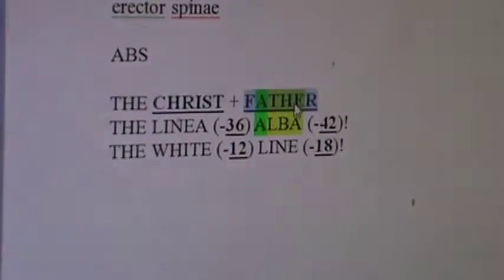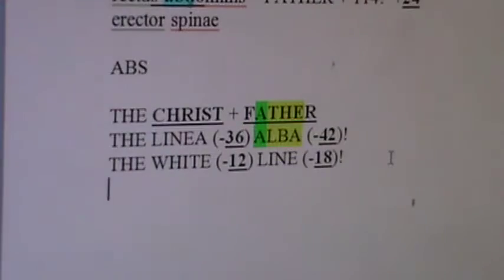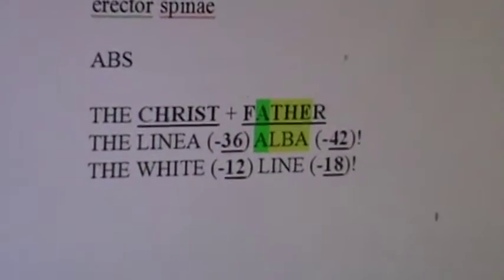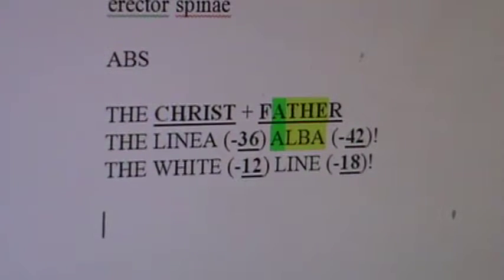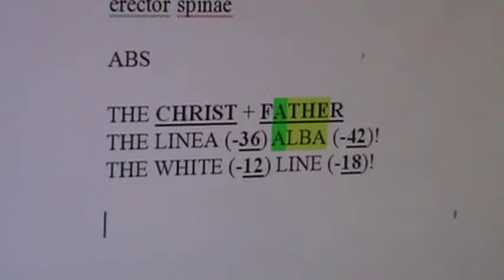In the divinely named body part, the center of the abdominals, which is the linea alba, which translates to the white line. So linea, every offset is in sixes and they're all different.